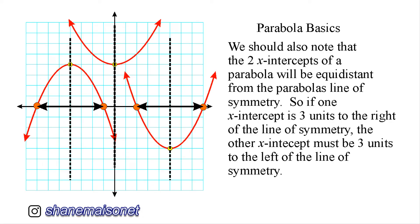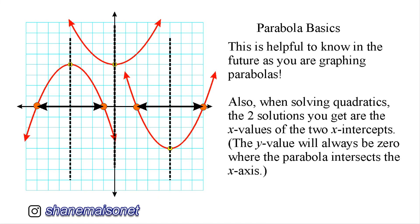So in the future, when we start graphing parabolas, it's just helpful to know that each root will be an equal distance from its own line of symmetry. So whenever we're solving quadratic equations, we always get two solutions. Well, those two solutions really are just the x-values of the two x-intercepts. Sometimes when you're solving the quadratic equation, you're going to notice that you get no solution. That just means that you have a parabola that does not have any roots, so you're not going to have any x-values because that curve does not intersect the x-axis at any point.